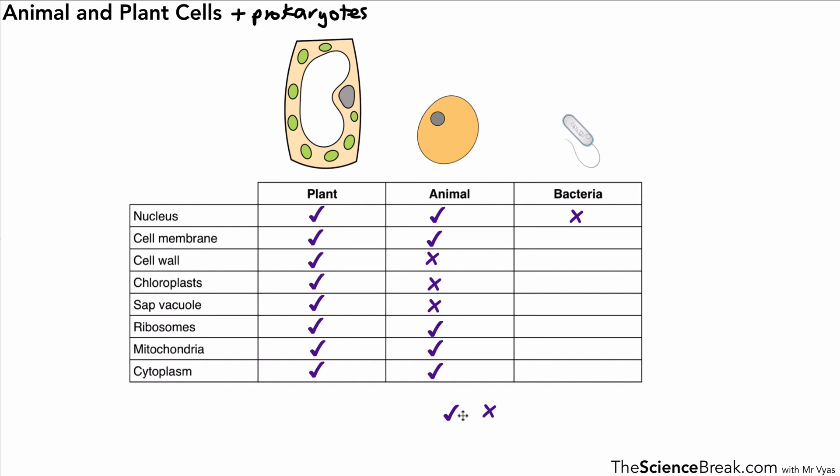What about bacteria or prokaryotes? They have a cell membrane, they have a cell wall just like plants, they do not have chloroplasts nor a sap vacuole, but they do have ribosomes. They don't have mitochondria, but they do have cytoplasm.